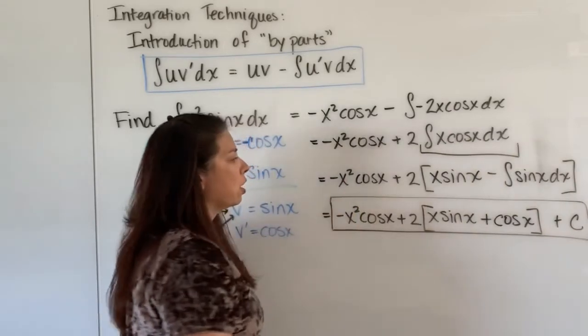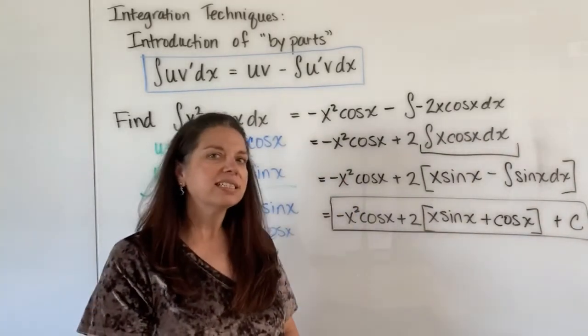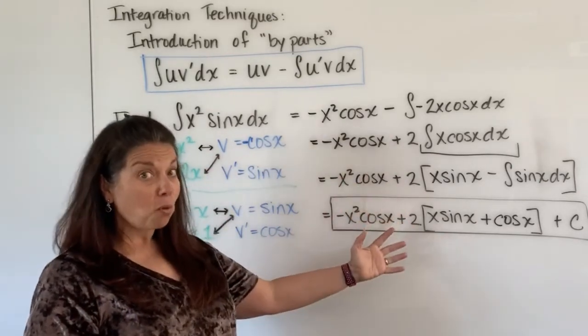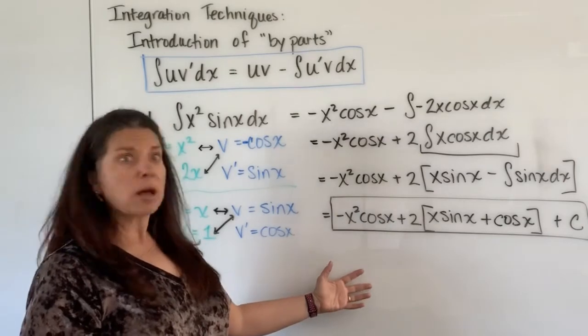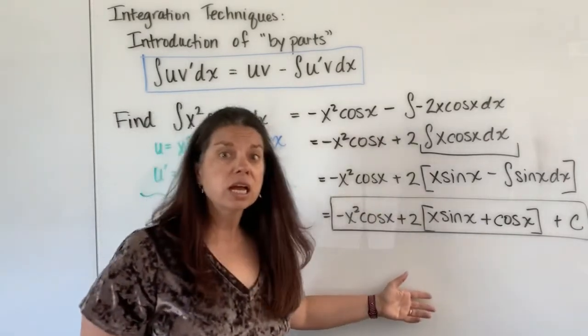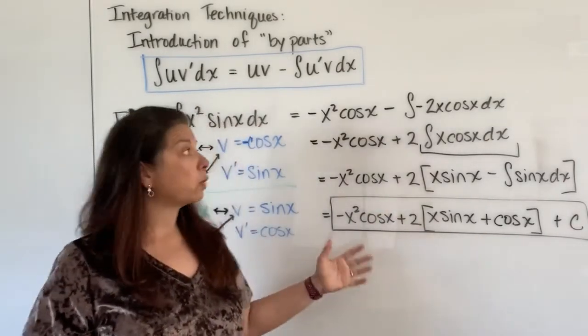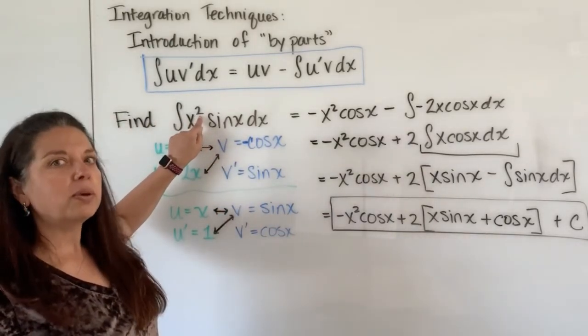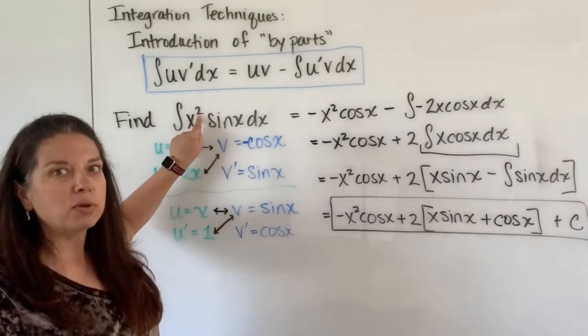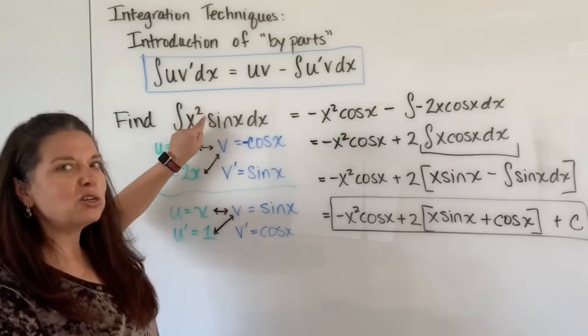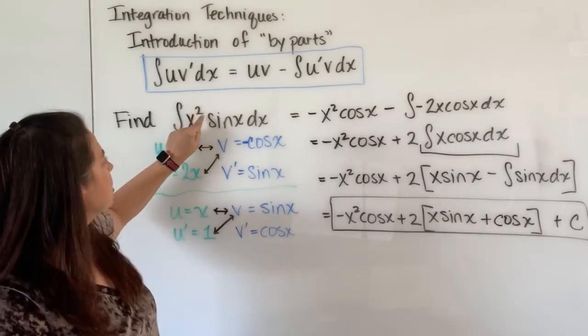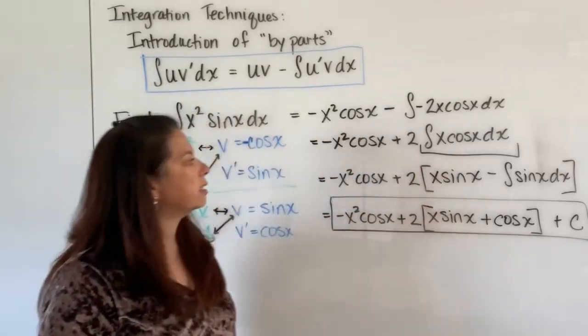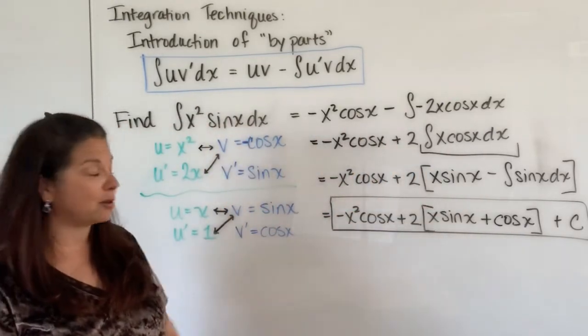And in this case it was a nice example to sort of showcase that you might have to do the by parts process more than once in a problem and it's possible you have to do it three times maybe four times all depending on the structure of the problem at the beginning. If I change this to a cube we would have to do this three times, if I change this to a five we would have to do this five times so there's something to it. It's kind of interesting thought process here to think about how the higher exponent kind of necessitates the additional by parts processes that goes on for integrating this particular function.